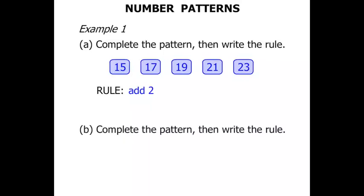The next one again. Complete the pattern then write the rule. This time we've got some different numbers. The same method though. So we start at 51. How do we get to 54?